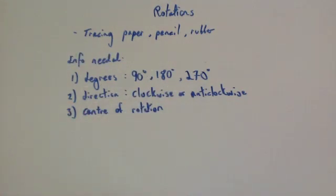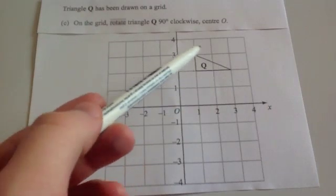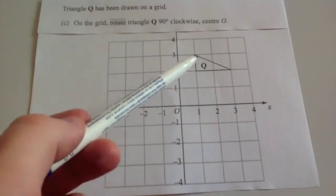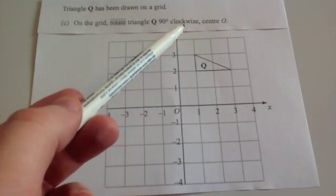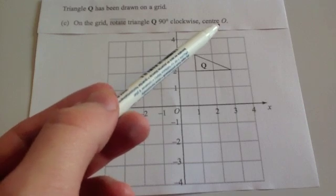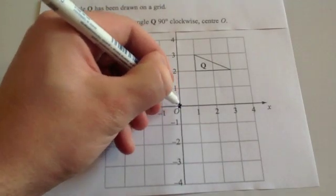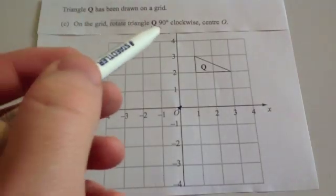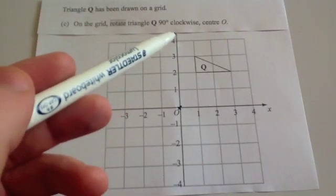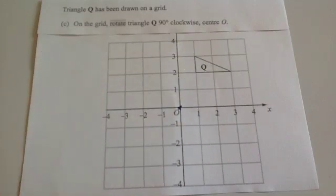Let's have a look at a typical question. Triangle Q has been drawn onto a grid. Rotate triangle Q 90 degrees clockwise, centre O. I've been told what the centre of rotation is — centre O — so I'm just going to put a little cross there at the origin, 0, 0. It's going to be 90 degrees clockwise, so clockwise goes around this way and 90 degrees is a quarter turn.